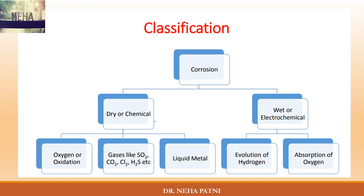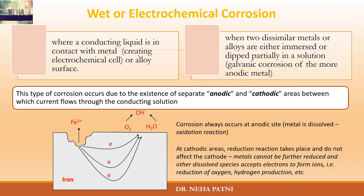In the previous video we covered dry-type corrosion, that is chemical corrosion. What I am going to cover today is wet or electrochemical corrosion. Electrochemical means there is generation of an electrochemical cell, so there has to be an anode, a cathode, and an electrolyte solution.